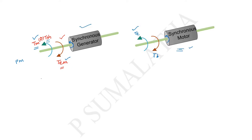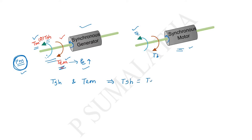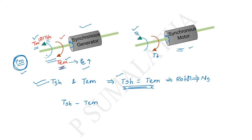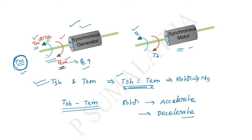For the synchronous generator, the two torques act in opposite directions. Under balanced conditions, the shaft torque equals the electromagnetic torque, and the rotor rotates at synchronous speed. However, we cannot always maintain this equilibrium. If there is any difference between the shaft torque and the electromagnetic torque, the rotor may accelerate or decelerate — this is what we call rotor dynamics.